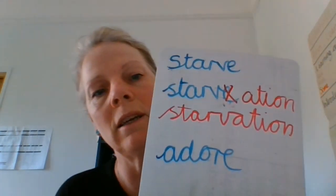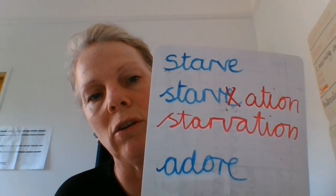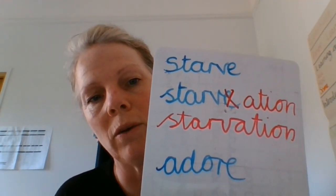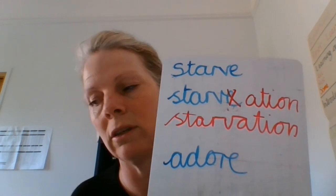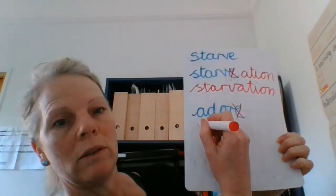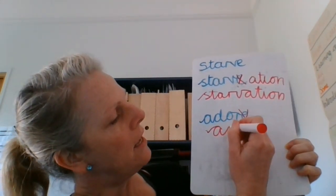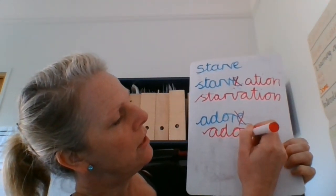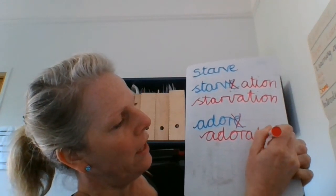Let's have a look at the word "adore" — to adore something, to love it a lot. How are we going to add "-ation"? That's right, we'll get rid of the "-e", and the new word will be "adoration" — a noun, a thing.